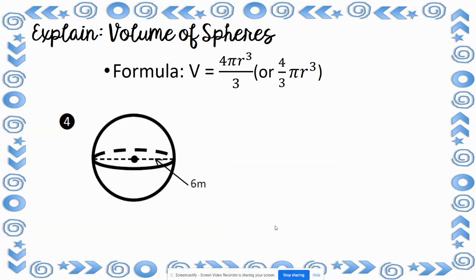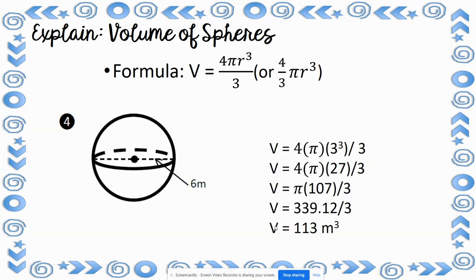Now do number 4 and put the volume in the chat. The volume is 113 meters cubed. The diameter is 6, so the radius is 3. 3 cubed is 27; 27 times 4 is 108; 108 times 3.14 is 339.12. Divided by 3 gives 113 meters cubed.